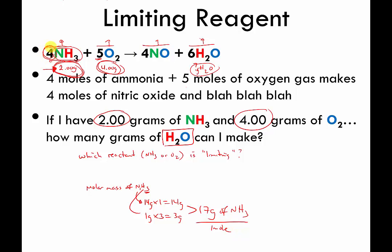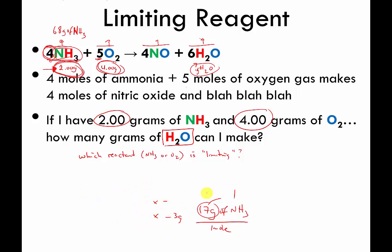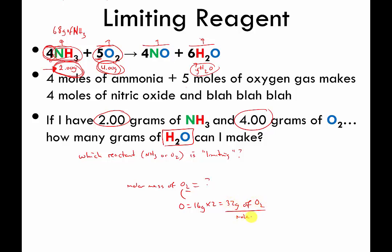We don't have one mole of NH3 in our equation — we have four moles. So four moles of NH3 weighs 17 times 4, which is 68 grams. I'm writing these weights above the balanced equation, making a new balanced equation using weights instead of moles. Next, molar mass of O2: oxygen is 16 g, we have two of them, so 32 g per mole of O2. But we have five moles in the balanced equation, so five moles of O2 is 32 times 5 — that's 160 grams.